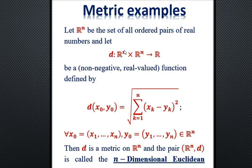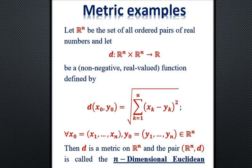We can generalize ℝ and ℝ² to ℝⁿ. We define a function d from ℝⁿ × ℝⁿ into ℝ using the formula d(x, y) = √(Σᵢ(xᵢ − yᵢ)²). This is the n-dimensional Euclidean metric. For example, if n = 3, we have the Euclidean space, where it gives the straight-line distance from one point in ℝ³ to another — the shortest distance between two points. This is one of the most easily understood metrics on a space.